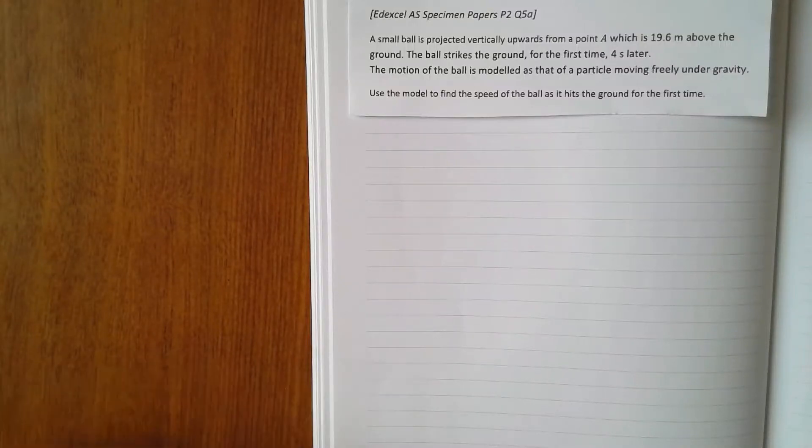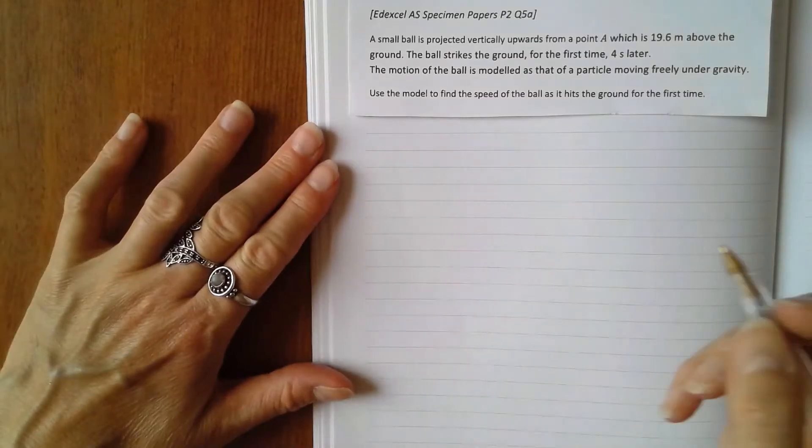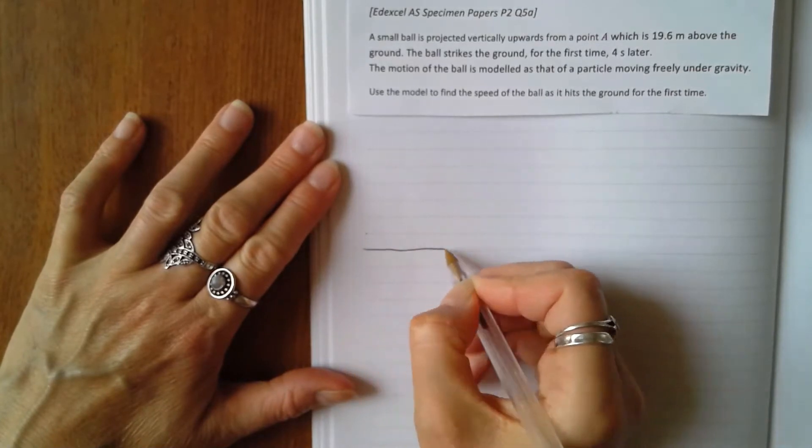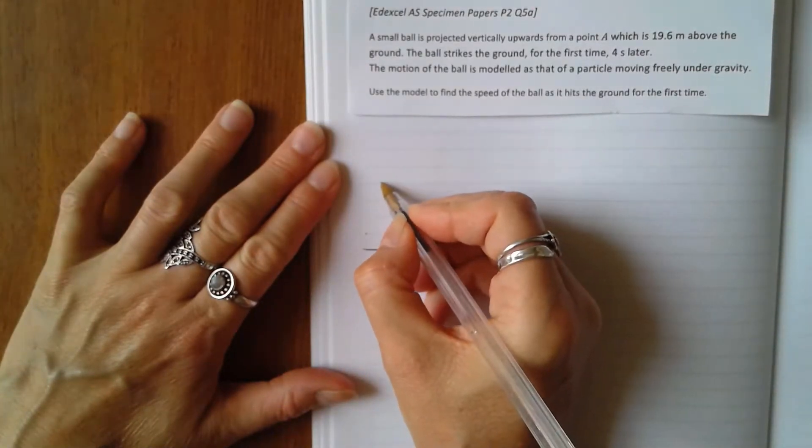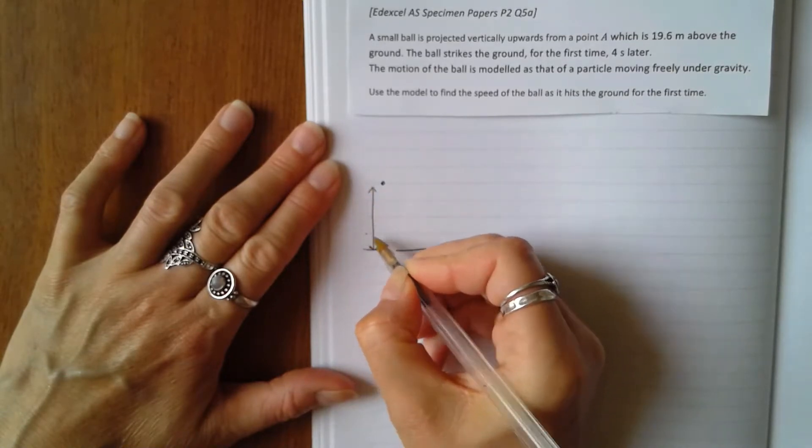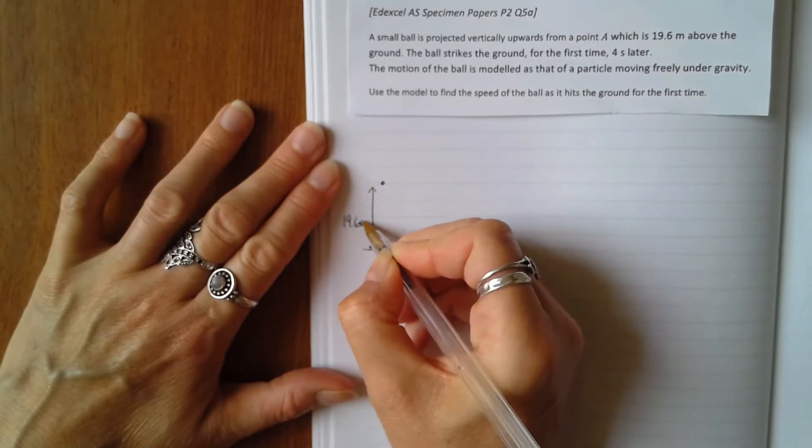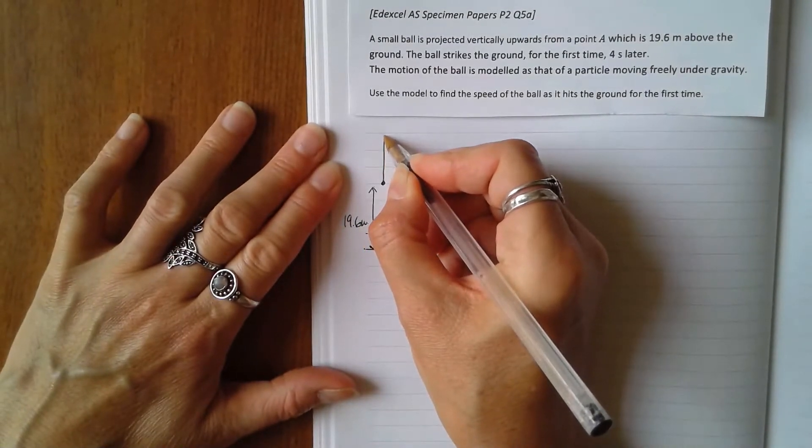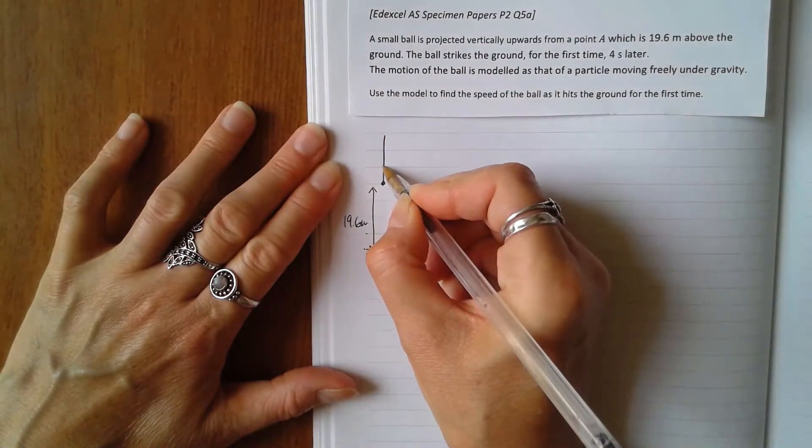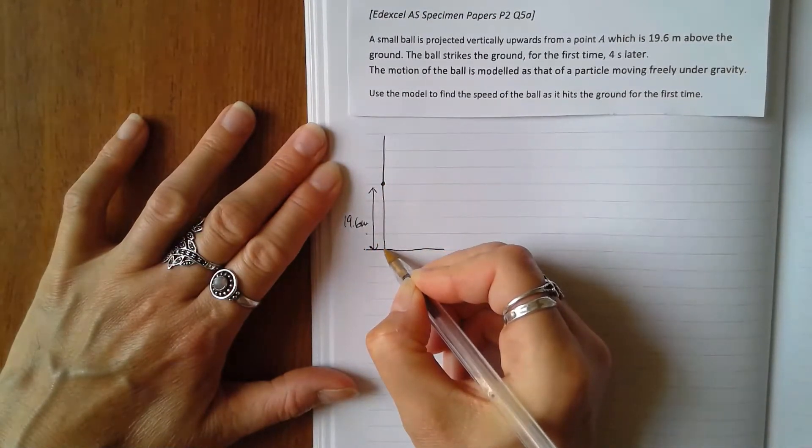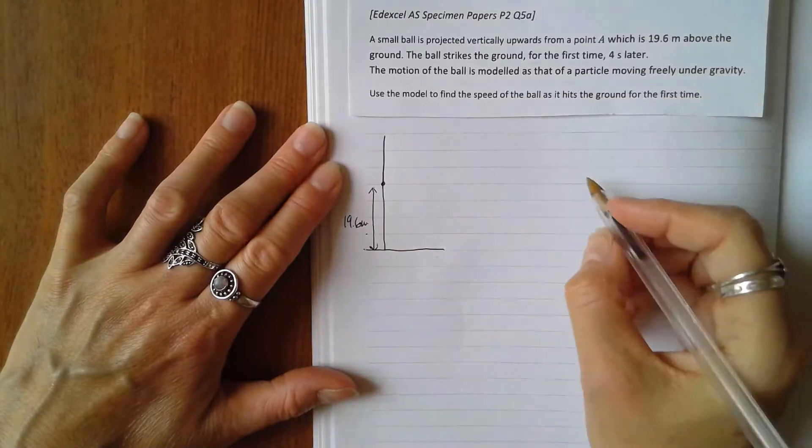In this question, the ball is being projected vertically upwards. The actual motion of the ball, if this is the ground here, it would start 19.6 meters above the ground, be projected vertically upwards, and gravity would mean it would turn around and then hit the ground four seconds later.